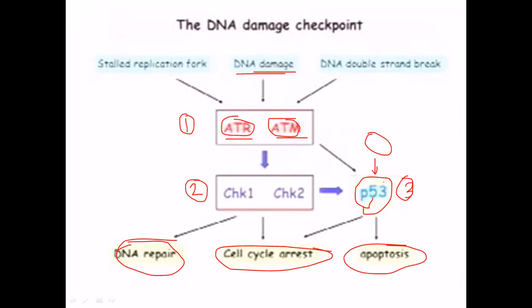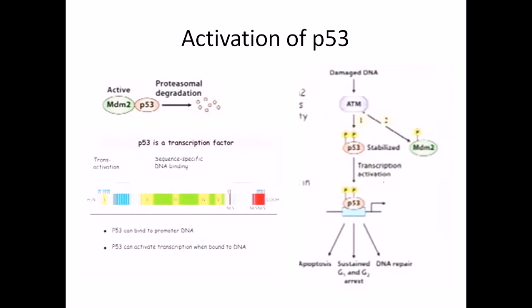Instead of finding p53 freely, we find p53 incorporated with other proteins called MDM2 proteins. In each cell, MDM2 proteins attach to p53 proteins and block the activity of p53, so p53 is no longer activated. p53 can stay as this MDM2-p53 complex form for as long as needed.